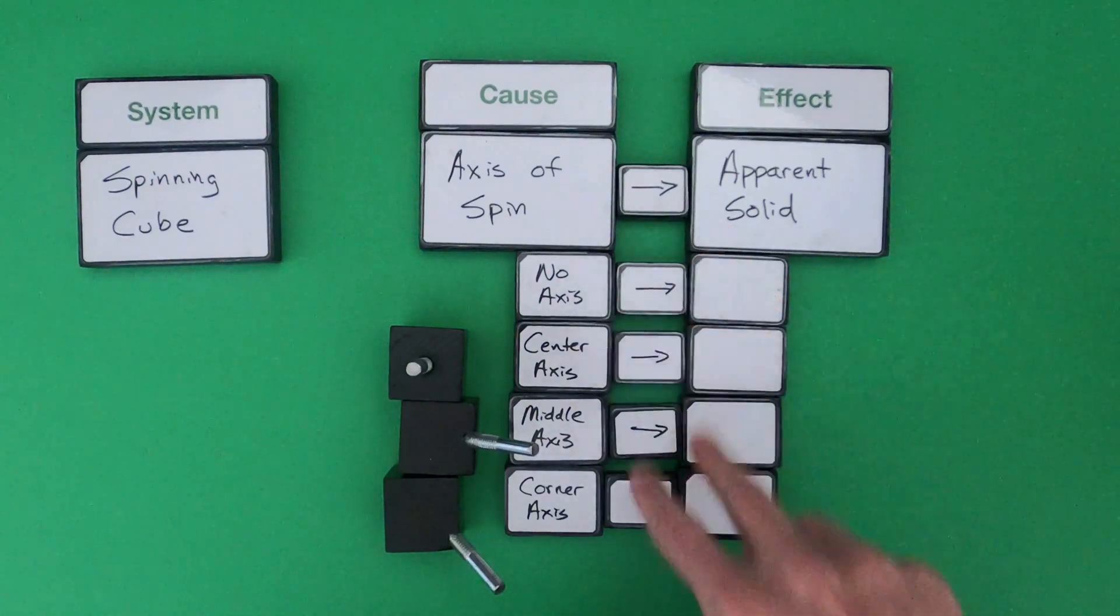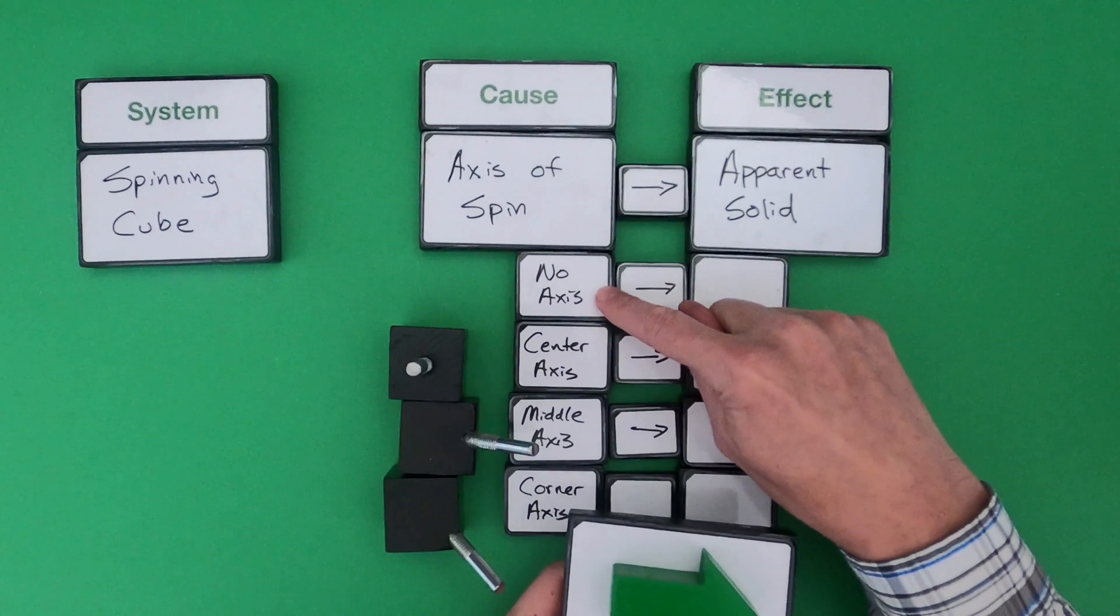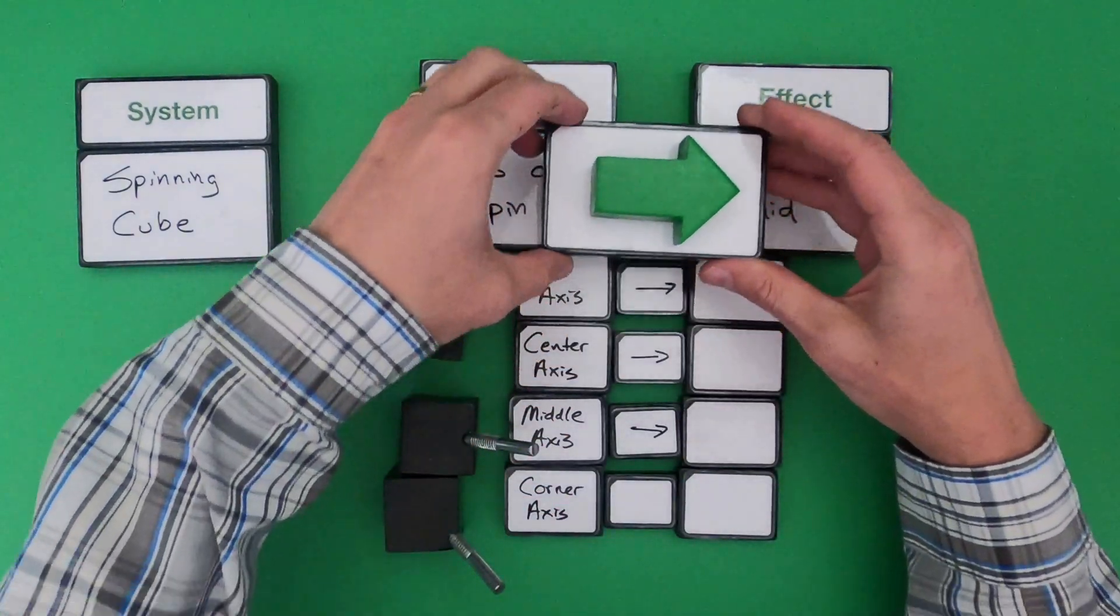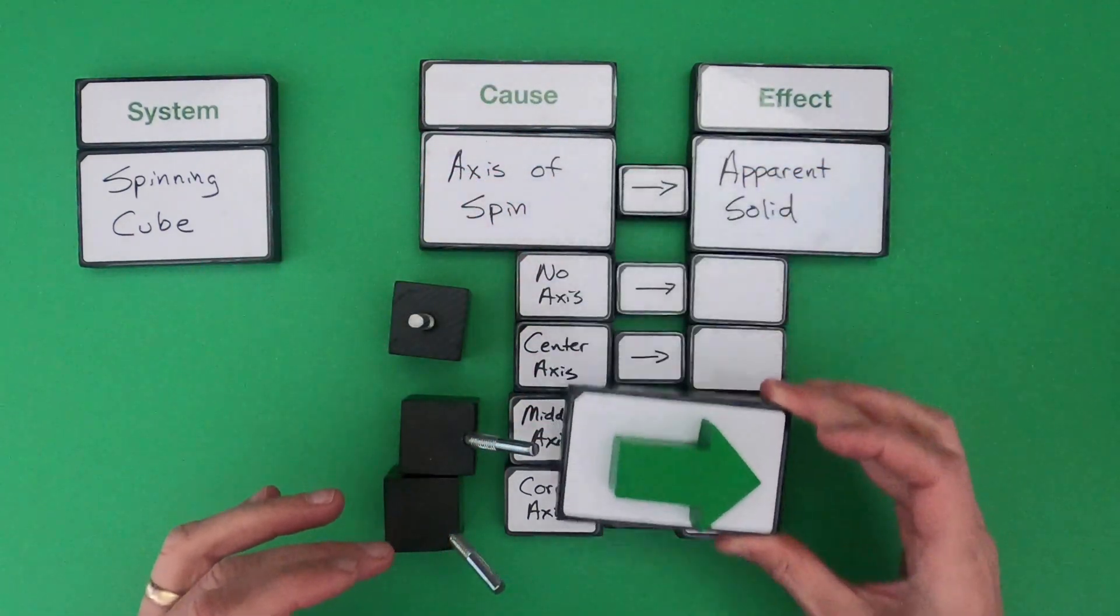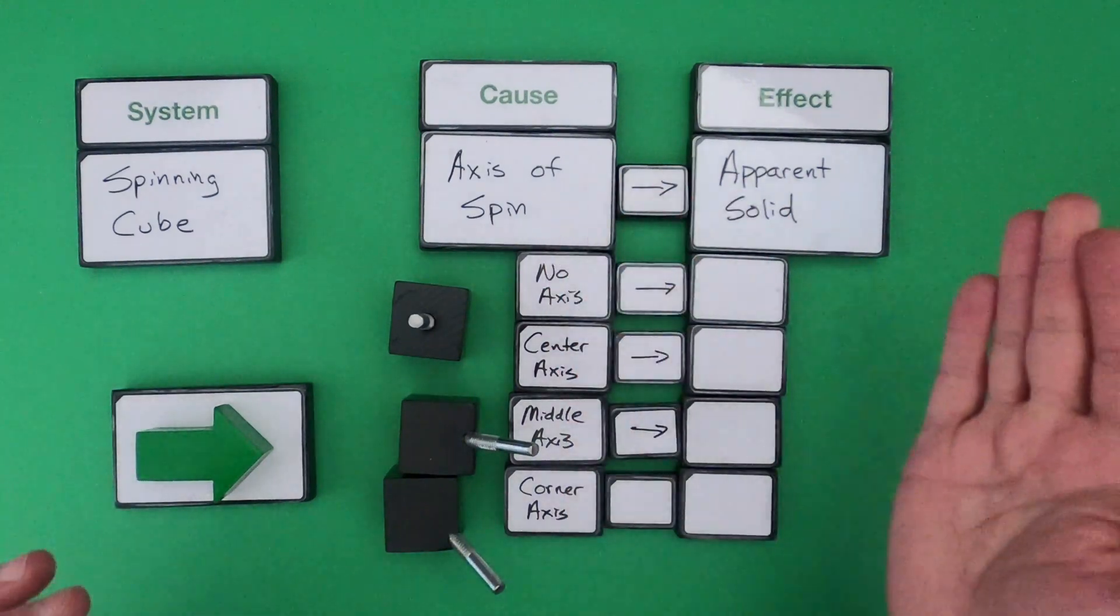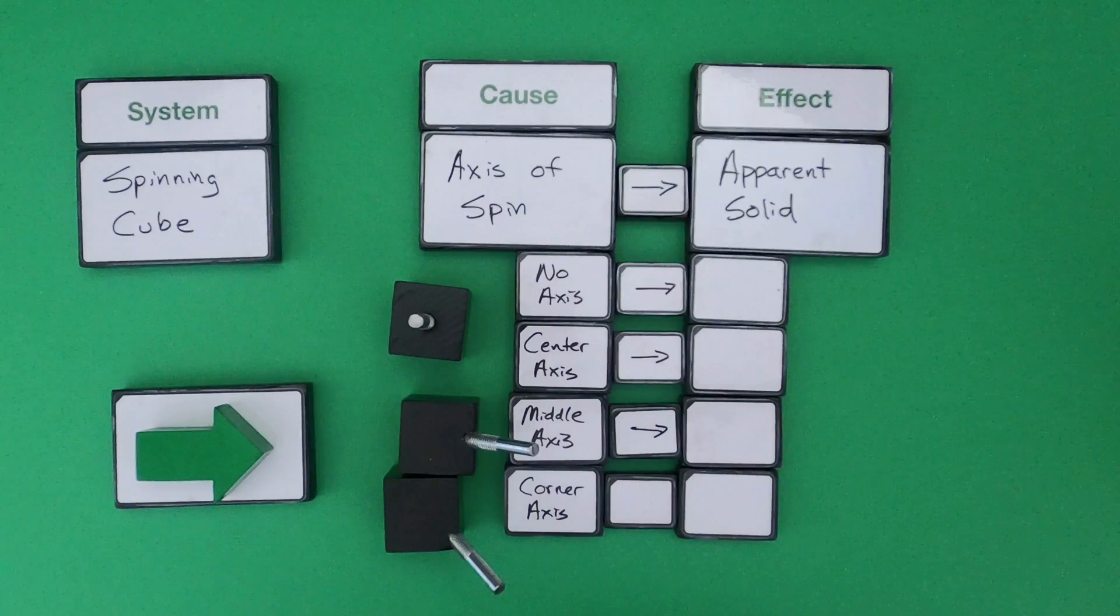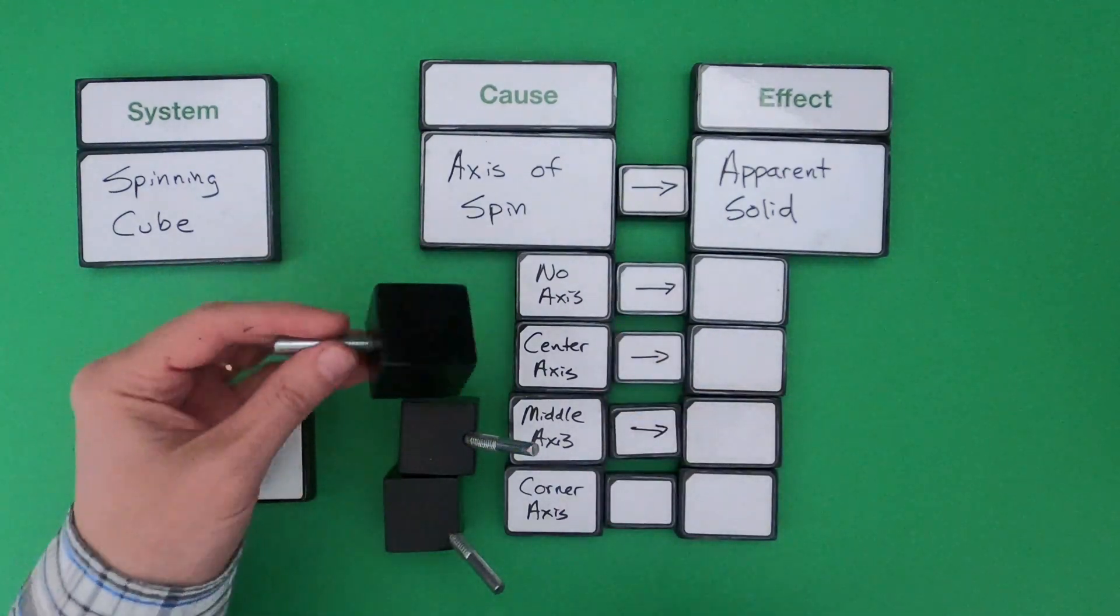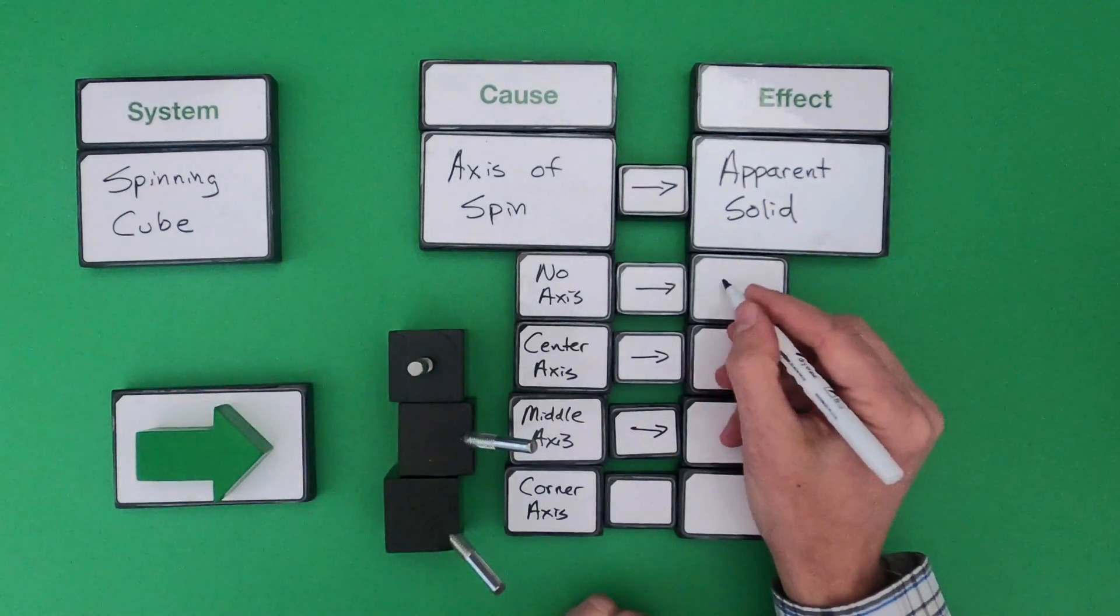You can see from this matrix that I've set up that we're going to start with no axis of spin, then we're going to move towards center, middle, and corner axis. What we're really digging into is this relationship - what's this relationship that we see between the causes on the left and the effect on the right? A really important step is to have no axis at all. If we start with the first one with no axis of rotation or no axis of spin, I would say the apparent solid that we're going to get is a cube.